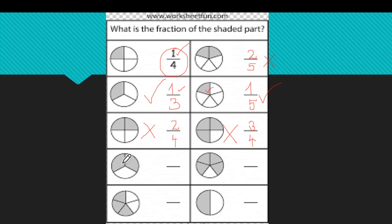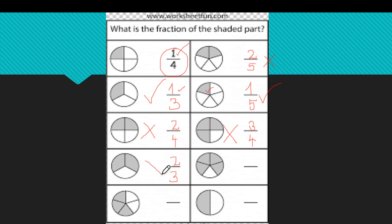How many equal parts do we have here? One, two, three. How many are shaded? One, two — two are shaded. Is this a unit fraction? No, it is not, because two parts are shaded, not one.